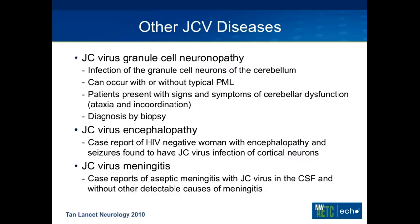There are some other rare JC virus diseases besides classic PML. Granule cell neuronopathy involves infection of granule cells of the cerebellum and can occur with or without typical PML; it's diagnosed by biopsy and patients present with cerebellar dysfunction. JC virus encephalopathy is unexpected since it's a white matter disease that shouldn't infect neurons, but one case has been reported in an HIV-negative woman with encephalopathy and seizures who was found to have neuronal infection on biopsy. There are also case reports of JC virus meningitis in patients where no other viral explanation for aseptic meningitis could be found.